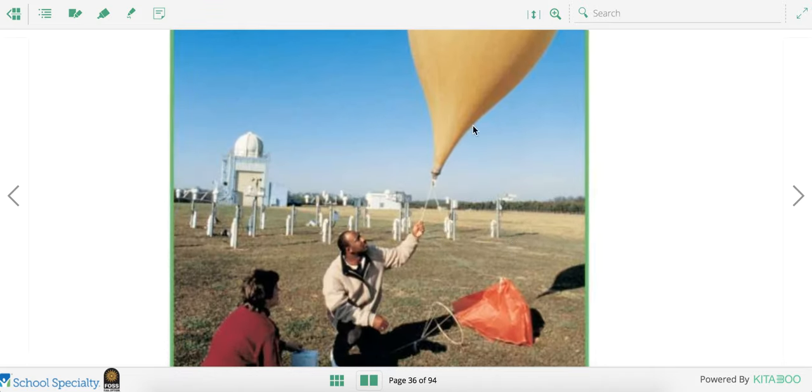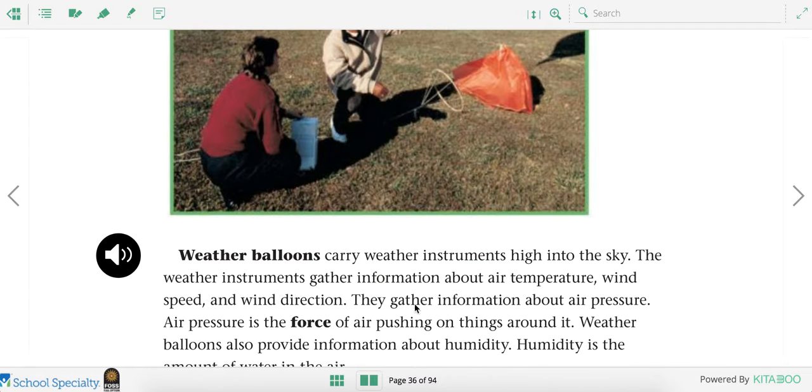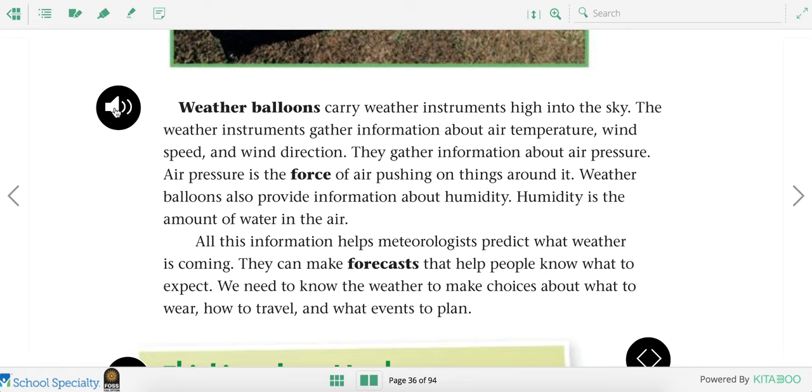Have you seen these weather balloons before? Meteorologists also use weather balloons to carry instruments high up into the sky. Weather balloons carry weather instruments high into the sky. The weather instruments gather information about air temperature, wind speed, and wind direction. They gather information about air pressure. Air pressure is the force of air pushing on things around it. Weather balloons also gather information about humidity. Humidity is the amount of water in the air. All this information helps meteorologists predict what weather is coming. They can make forecasts that help people know what to expect. We need to know the weather to make choices about what to wear, how to travel, and what to do.